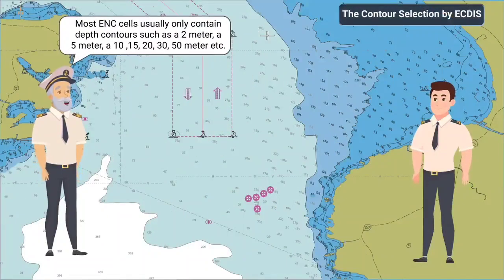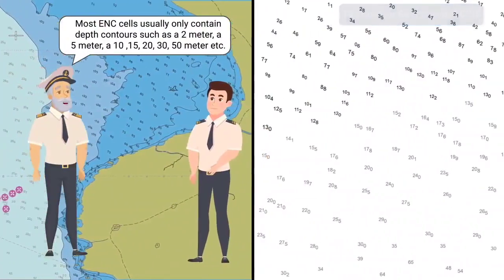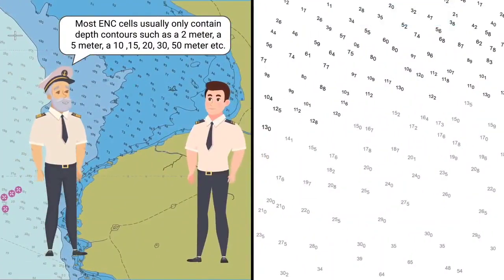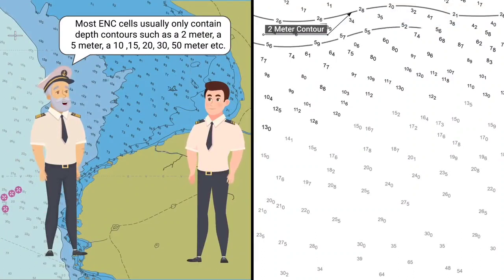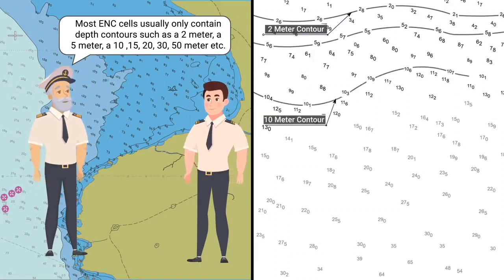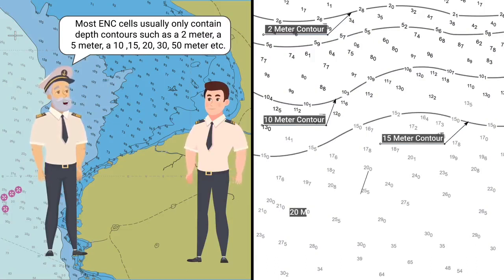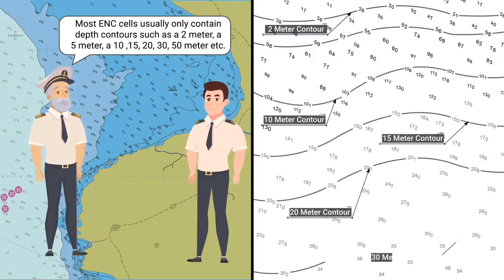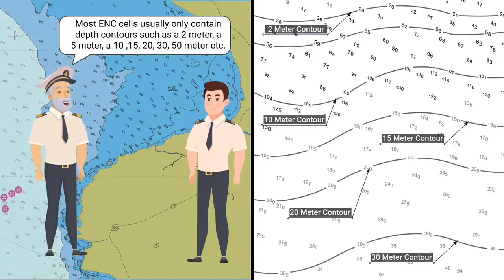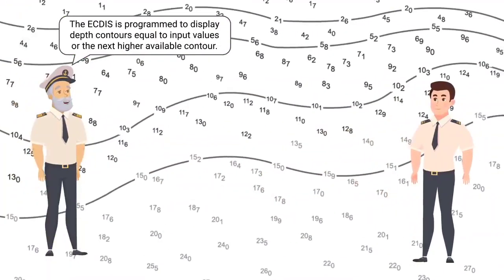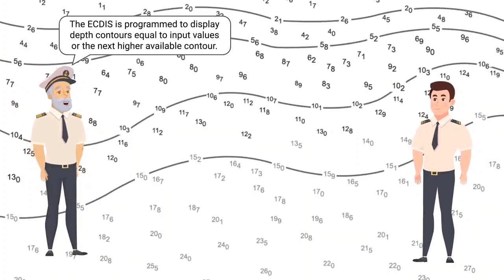Most ENC cells usually only contain depth contours such as a 2 meter, 5 meter, 10, 15, 20, 30, 50 meter, etc. The ECDIS is programmed to display depth contours equal to input values or the next higher available contour.